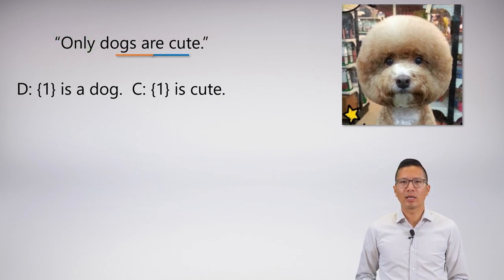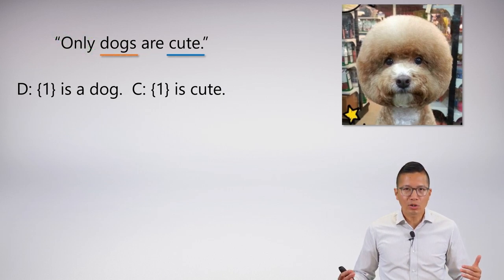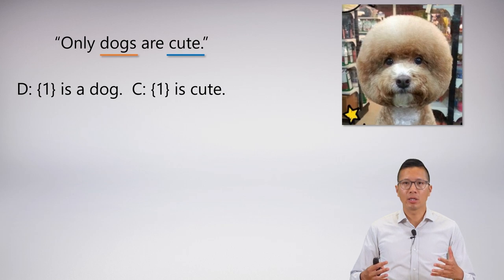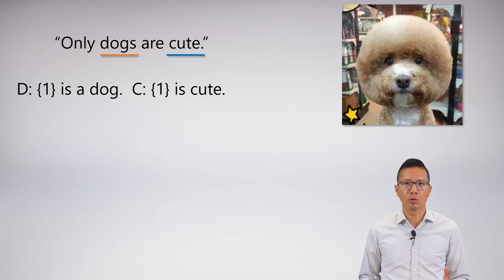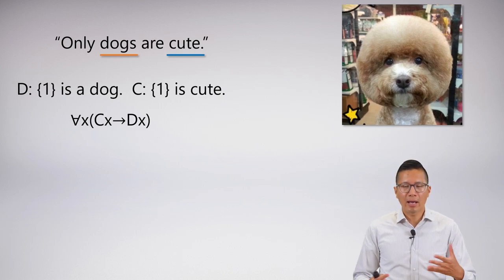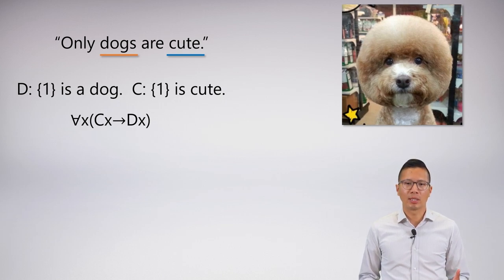When I actually get rid of the 'only', it is really just swapping the antecedent and the consequent. Another way of thinking about it: the subject of 'only dogs are cute' actually isn't about dogs at all — it's actually about things that are cute. It's saying if you're cute, then you must be a dog. That is a natural way of understanding 'only', and it fits with what we know from sentential logic perfectly.